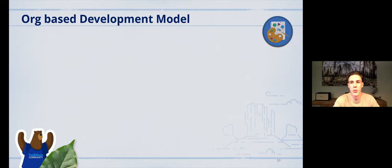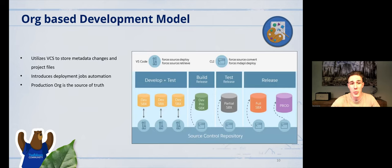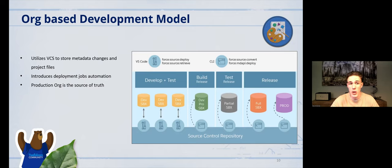Having said that, we come to one of the most widely used development models: org-based development. We finally utilize a version control system to store metadata changes and project files. We introduce deployment job automation. Our production org is the source of truth. We create a sandbox from production — it stores all the metadata and configurations from production — and on that sandbox we start developing our changes. By utilizing version control, we deploy our changes to other sandboxes and keep our environments in sync.